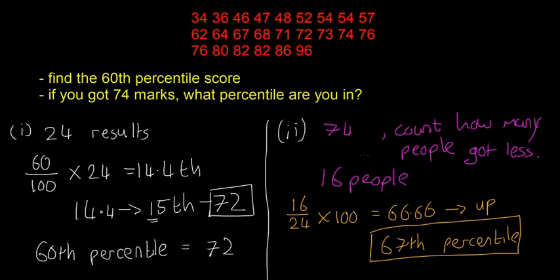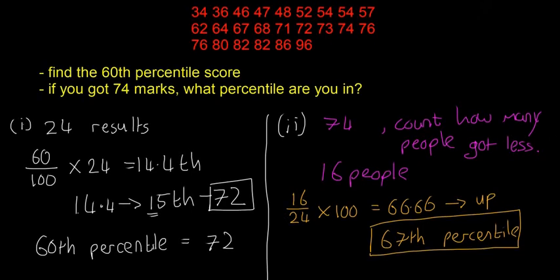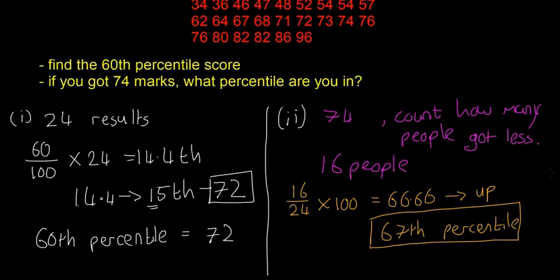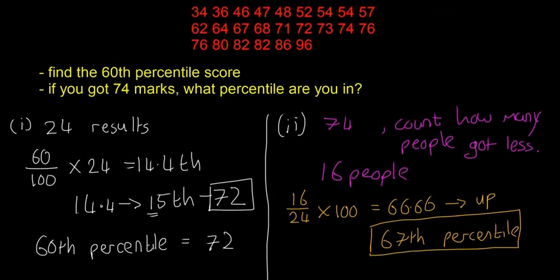So hopefully those two questions make sense. In this one, you just count how many people are below you, because that's sort of what a percentile means. 60th percentile means how many people do less than you. And then you just put that over 24 to get the percentile version of it. Those are two sort of on their own questions that will come up. I found the best way was sort of just to learn them off.